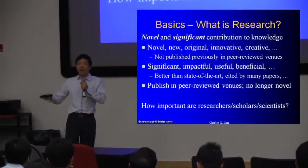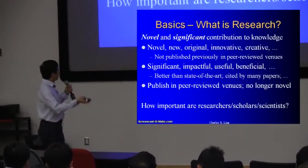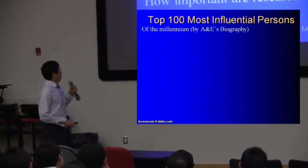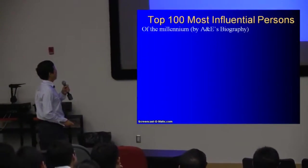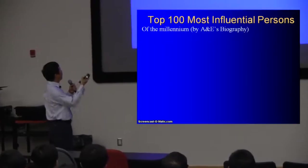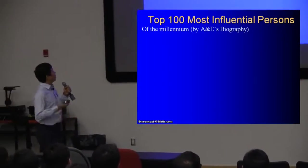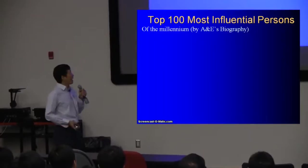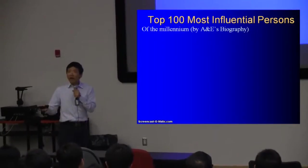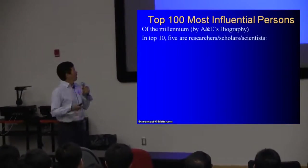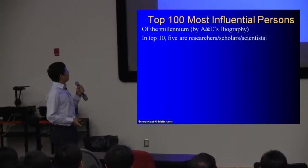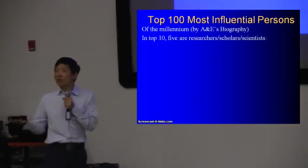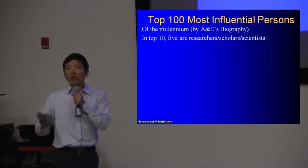How important are researchers, scholars, or scientists in the world? I want to tell you that from the A&E biography, the top 100 most influential persons in the last millennium — dead or alive — five of the top ten are researchers, scientists, or scholars, just like you will be.